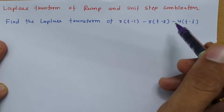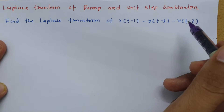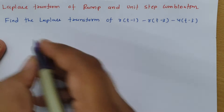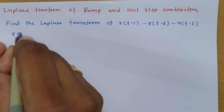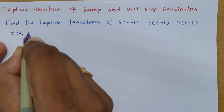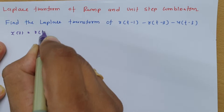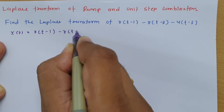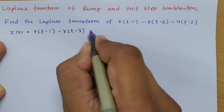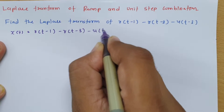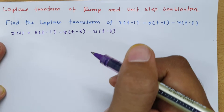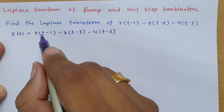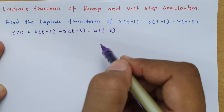In the first problem, we have a ramp and unit step combination. The signal is given by x(t) = r(t-1) - r(t-3) - u(t-3). We need to identify the Laplace transform of this.